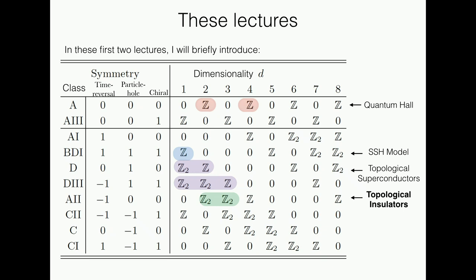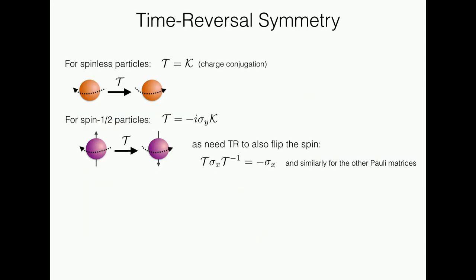Now I want to say a few words about some of the other topological phases within this periodic table. First, we have topological insulators, which are what really started the field going in 2005. I want to highlight something about time-reversal symmetry, which is key to understanding these phases of matter. Unlike Chern insulators, topological insulators have time-reversal symmetry — specifically for spin-1/2 particles. Time-reversal symmetry for spin-1/2 particles includes charge conjugation, because momentum must flip, which in quantum mechanics just means changing the sign of i. If you want spin-1/2, you also need to flip the sign of the spin, so you need to add Pauli matrices to do that.